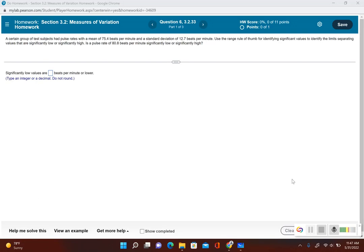In this problem, we're going to take a look at how to use the range rule of thumb, which helps us identify which values are significantly low or significantly high. A certain group of test subjects had pulse rates with a mean of 75.4 beats per minute and a standard deviation of 12.7 beats per minute.